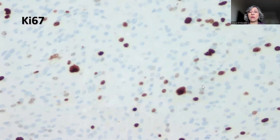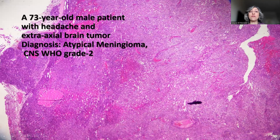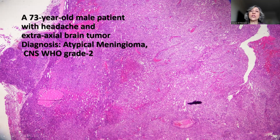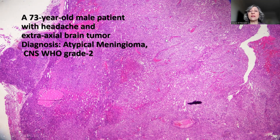The Ki-67 was in the range of 5%. The final diagnosis of this case was atypical meningioma, CNS WHO Grade 2, based on the presence of spontaneous foci of necrosis, the sheet growth pattern, and on high-power magnification, the prominence of nucleoli. These three features support the diagnosis of atypical meningioma, even in the absence of increased mitotic activity or brain invasion. I hope you find this tip useful in your daily practice. Thank you.